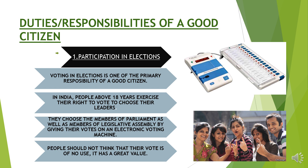Voting in elections is one of the primary responsibilities of a good citizen. Number one: participation in elections. In India, people above 18 years exercise the right to vote to choose their leaders. They choose the members of parliament as well as members of legislative assembly by giving their votes on an electronic voting machine. People should not think that their vote is of no use — it has great value. Pictures of the EVM machine are given for you to see.